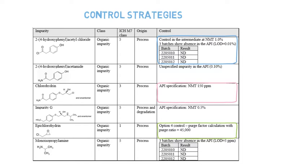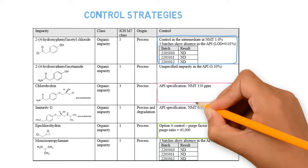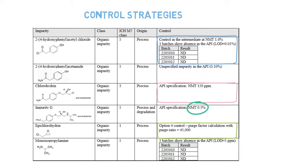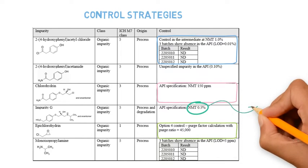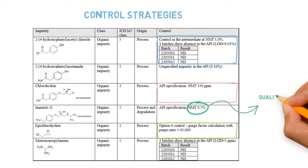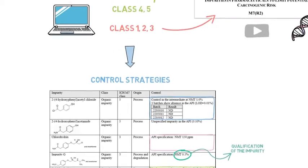It's also important to note that in case any impurity has a limit higher than the qualification threshold described in ICH Q3A, it will be necessary to qualify this impurity, demonstrating that this higher limit does not represent any toxicity concern.